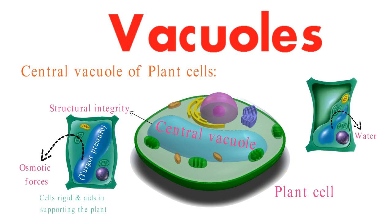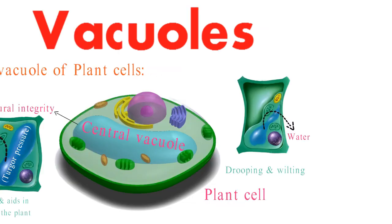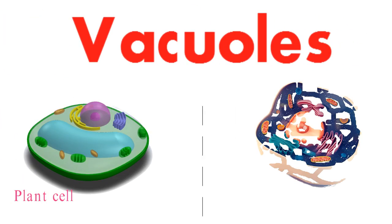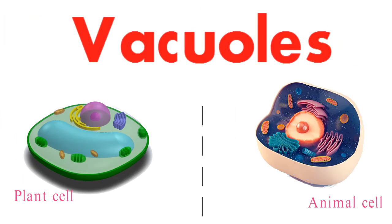Conversely, water loss leads to drooping and wilting. Across the divide of plant and animal cells, we find striking parallels in the storage functions of vacuoles.